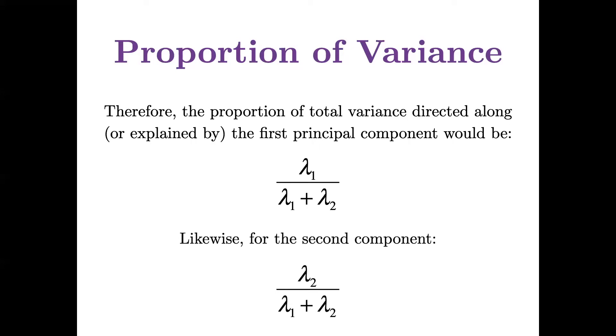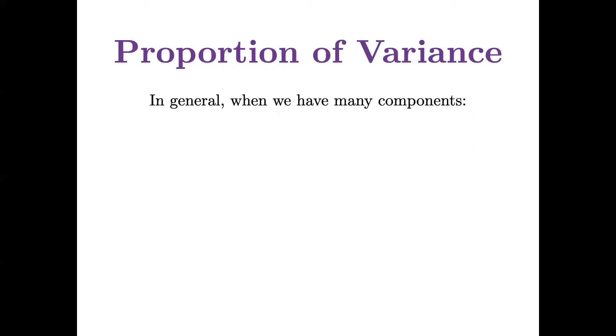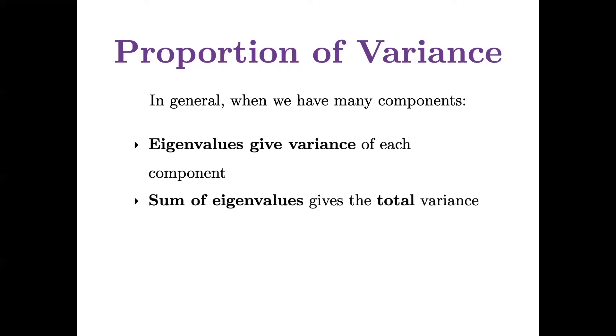And this truth holds up in general, when I have many components, each eigenvalue gives the variance of that component. The sum of the eigenvalues will give me the total variance, which is also equal to the sum of the variances of each of my original variables.